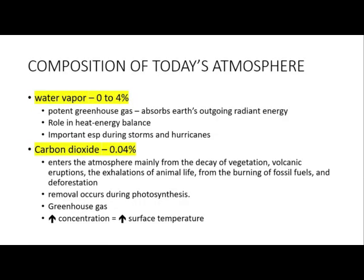The third one is water vapor. Water vapor is actually a potent greenhouse gas because it absorbs the outgoing radiant energy instead of releasing it to the air. We actually use this radiant energy during storms and typhoons. Water vapor also has a role in heat energy balance.